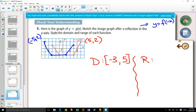For the range, the smallest value is negative 2. And then the largest value for the y values is positive 2.